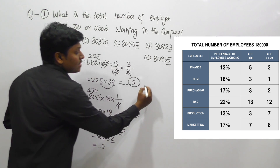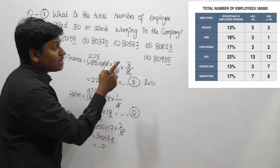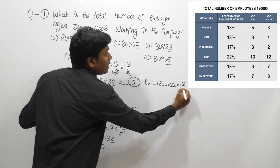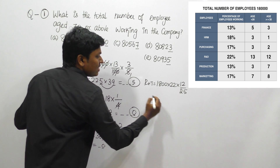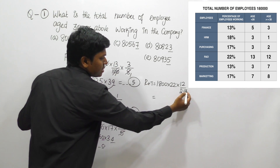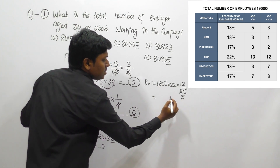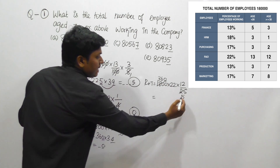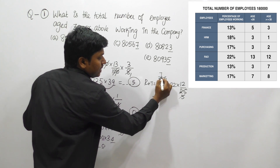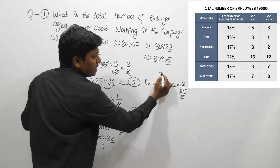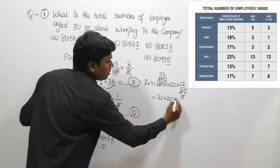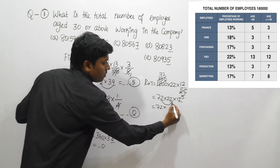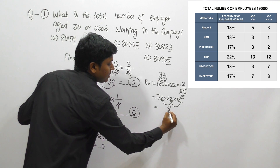Next is R&T, which is 22 percentage. Out of 1,800, 22 percentage, and the ratio for aged 30 or above is 12 divided by total ratio 25. Cancelling on the 5-times table: 5 fives are 25; 5 threes are 15, remainder 360. Cancel again: 7 fives are 35, remainder 1, that is 10; 5 twos are 10 — giving 72. So 72 into 22 into 12: last digit 2 times 2 is 4, times 2 is 8. For R&T, the last digit is 8.